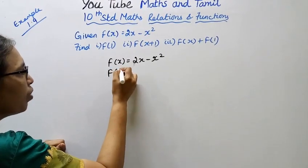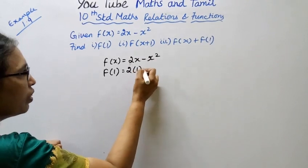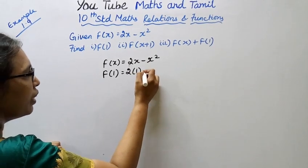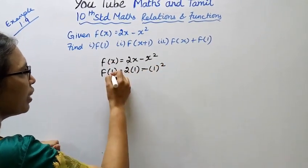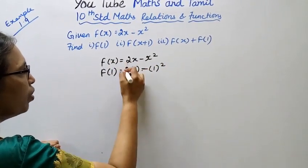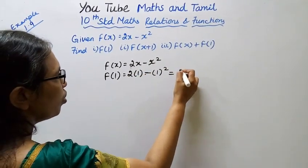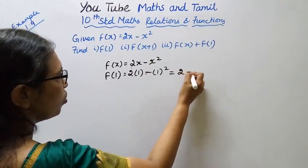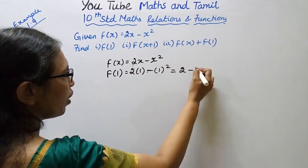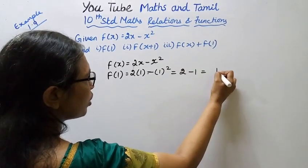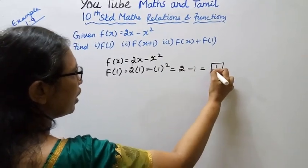Substituting x equal to 1: that is 2 into 1 minus 1 square. Therefore, 2 into 1 minus 1 square equals 2 minus 1, which equals 1.